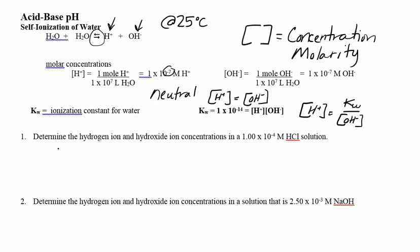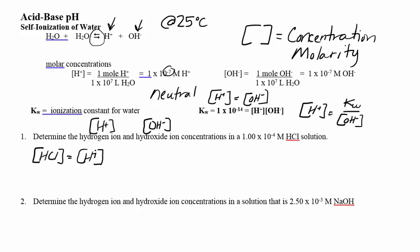Let's determine the hydrogen ion — they could also call it hydronium — and the hydroxide. HCl is a strong acid. The only acids you'll see are strong acids; if I give you an acid, assume it's strong. Strong means 100% ionizes. So if I give you the acid concentration, it is the hydrogen concentration — just 1×10⁻⁴.